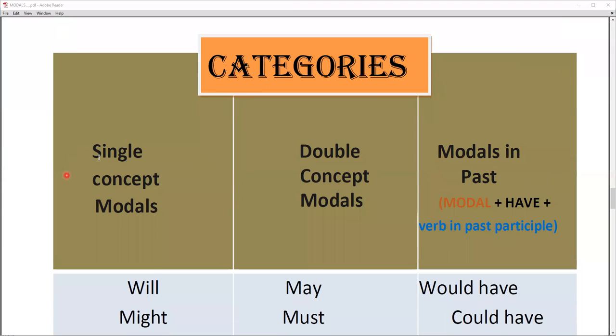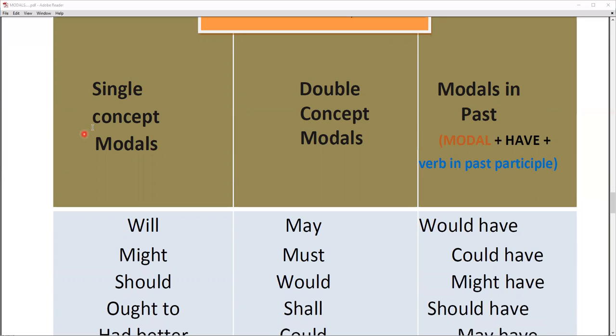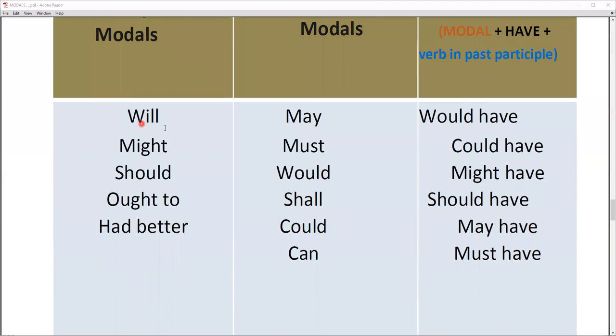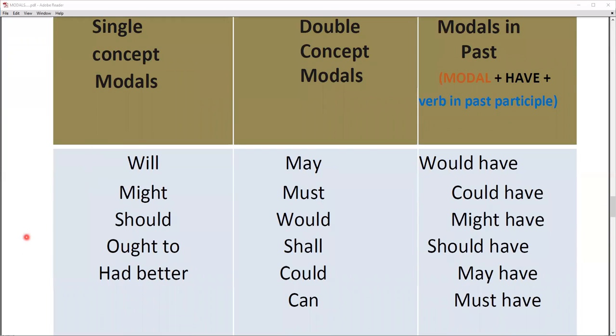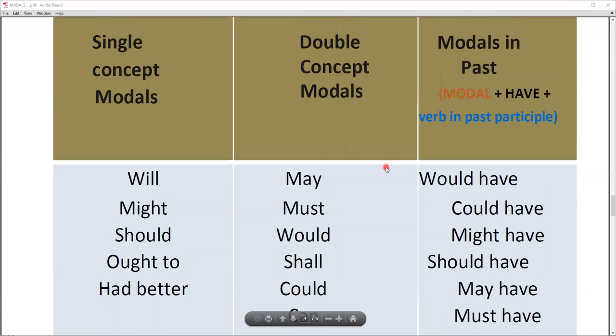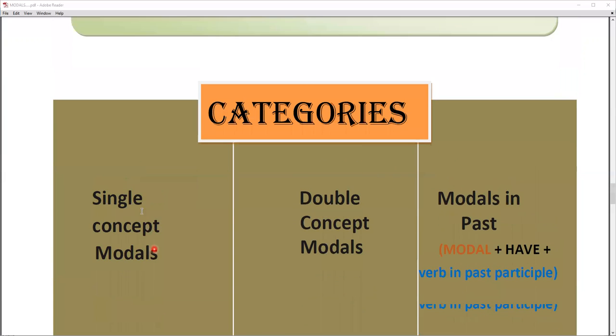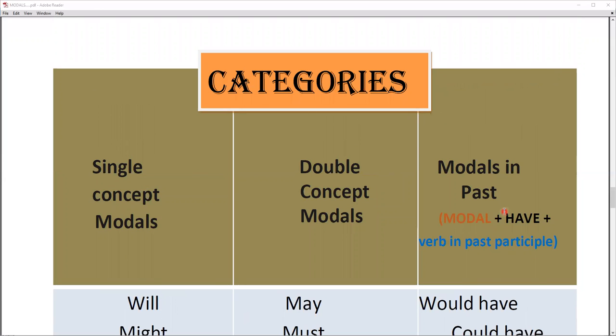Let's read the category: Single Concept Modals, Double Concept Modals, Modals in Past. First we will read Single Concept Model in which we include will, might, should, ought to, had better. Double Concept Models: may, must, would, shall, could, can. And Modals in Past means modal plus have which will be used with the past participle, third form. That is would have, could have, might have, should have, may have, must have.